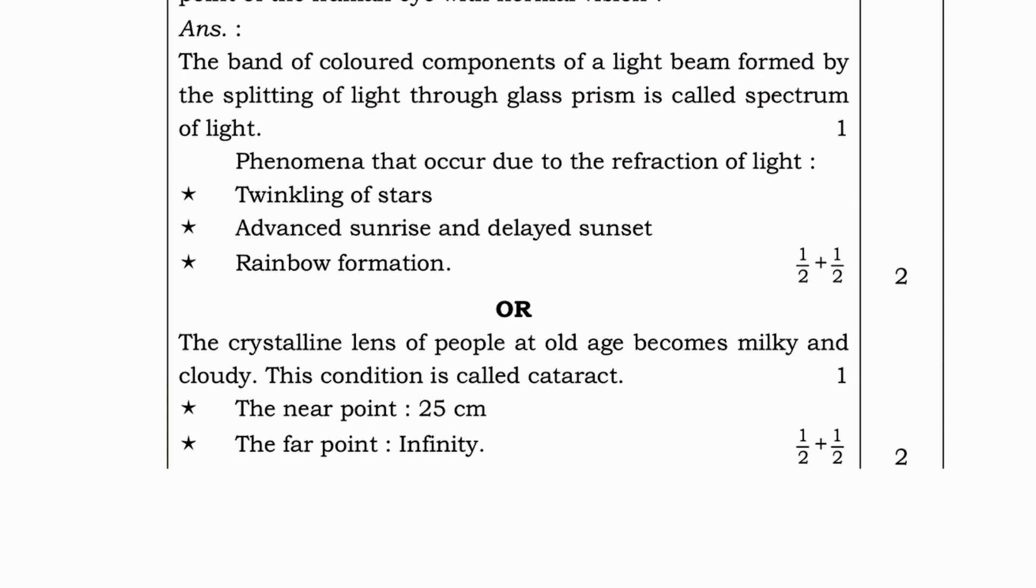Answer. The band of colored components of a light beam formed by the splitting of light through glass prism is called spectrum of light. Phenomenon that occurs due to the refraction of light: twinkling of stars, advanced sunrise and delayed sunset, rainbow formation.